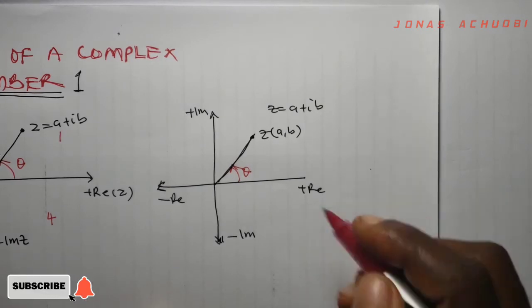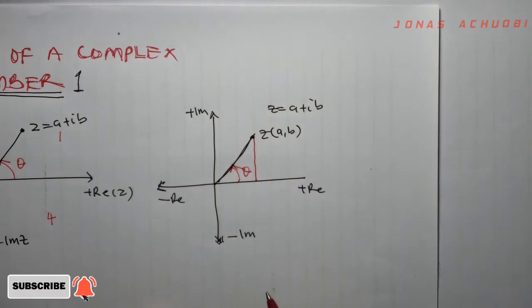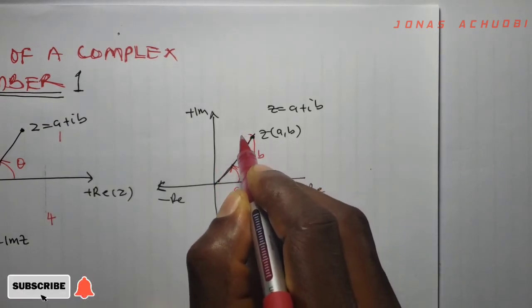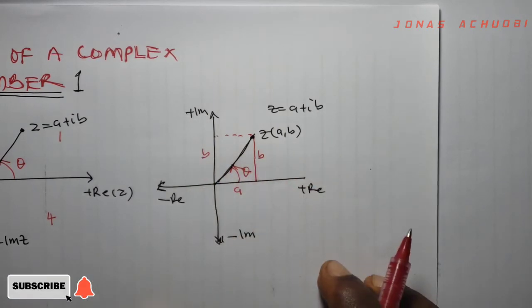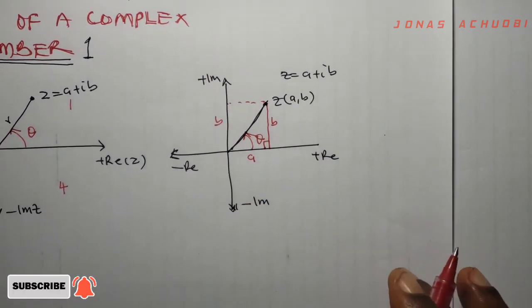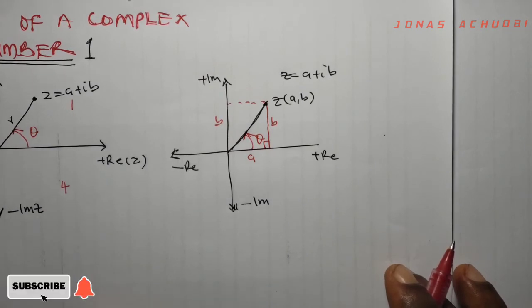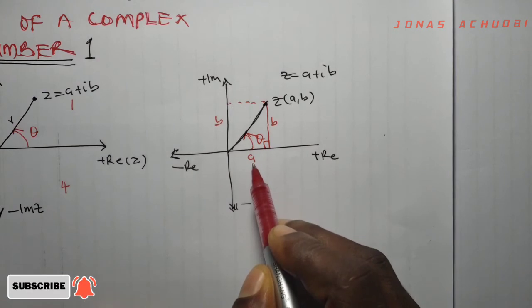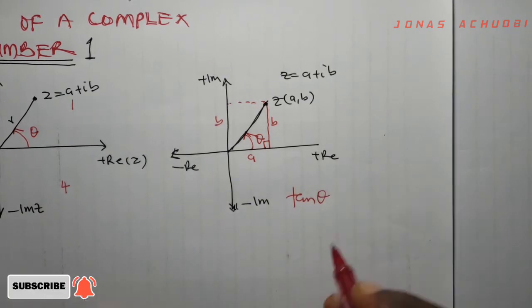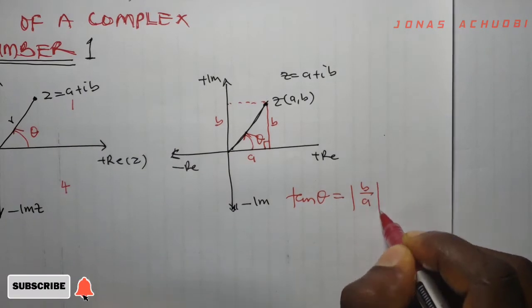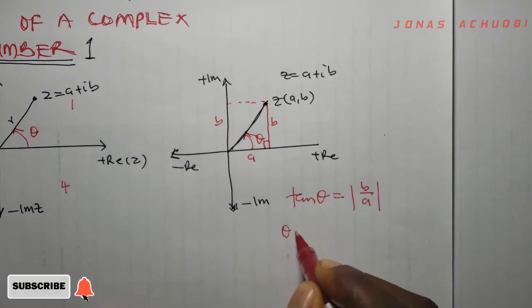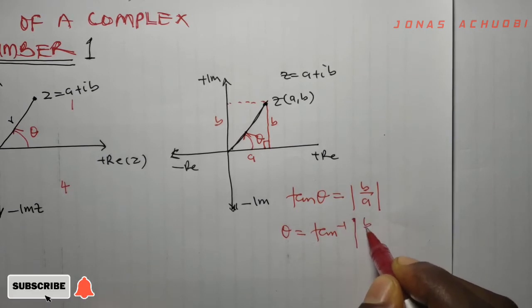So how do we get this argument? If we complete the triangle, the real part is a and the imaginary part is b, forming a right-angle triangle. From our elementary trigonometry using SOHCAHTOA, opposite over adjacent gives us tangent. So the tangent of theta is equal to the absolute value of b over a, and therefore theta is equal to the tan inverse of b over a.